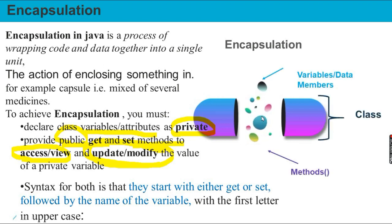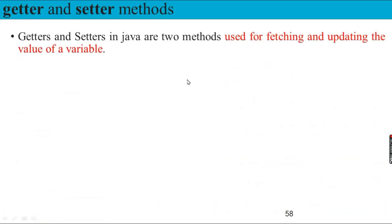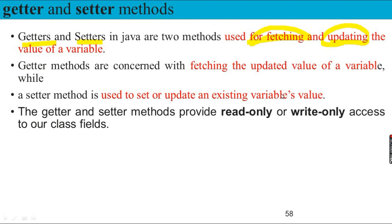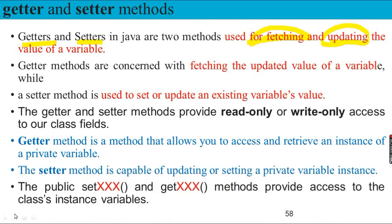Variables and getter and setter methods bind together to form a class. Getter and setter methods in Java are the two methods used for fetching and updating the value of a variable. The getter method is used to read or fetch data, whereas the setter method is used to set or update the initial value assigned to a variable. Getter methods are concerned with fetching or reading values, while setter methods are used to write or update existing variable values.